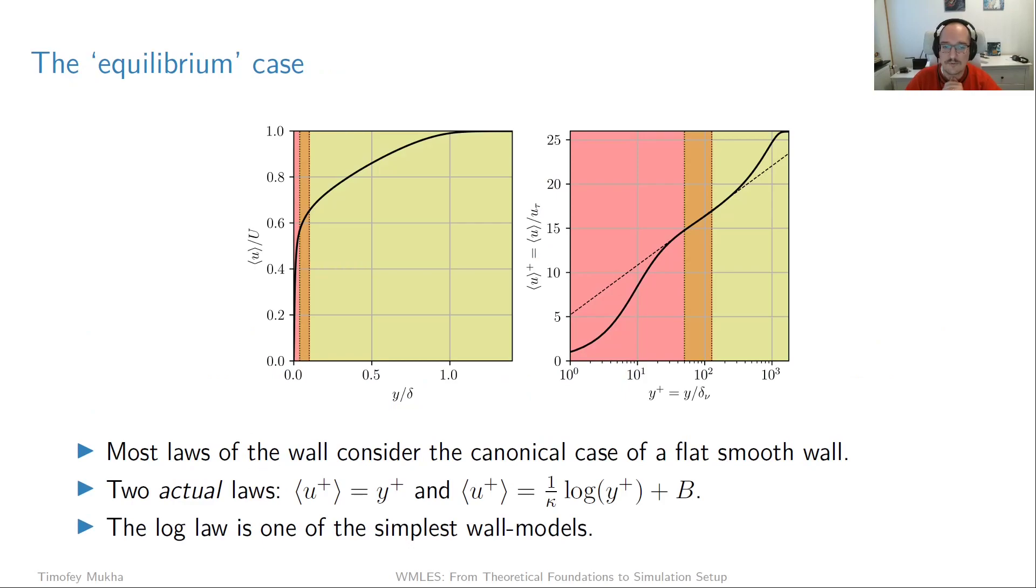So why not come back to where we sort of started this video series and look at how the velocity profile looks in the boundary layer again. So here we have it in outer and inner coordinates. And actually, just from this profile, we can already say what the simplest algebraic wall model is. Because in this profile, we have two regions where we actually have a real law, not an approximation, and one is here in the viscous sublayer where simply U plus is equal to Y plus. So this is known. And then we have the log law, which is the line here.